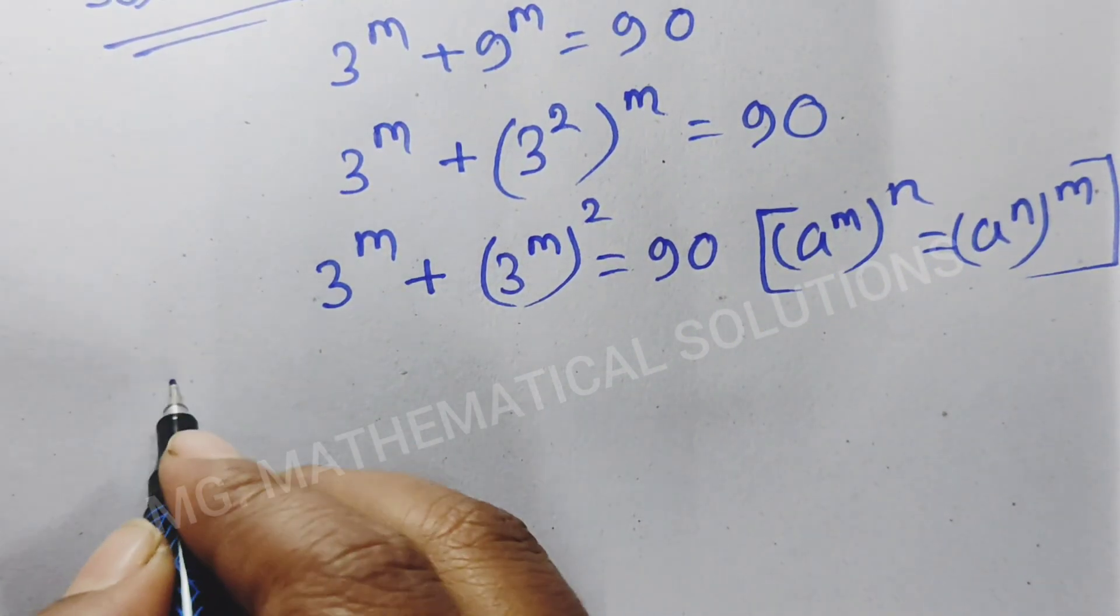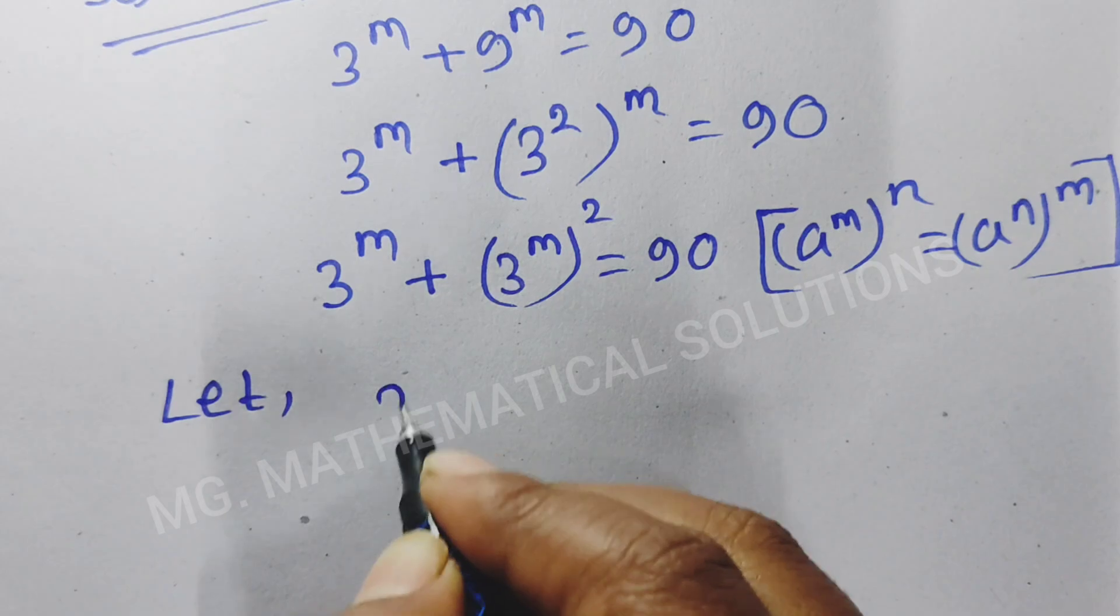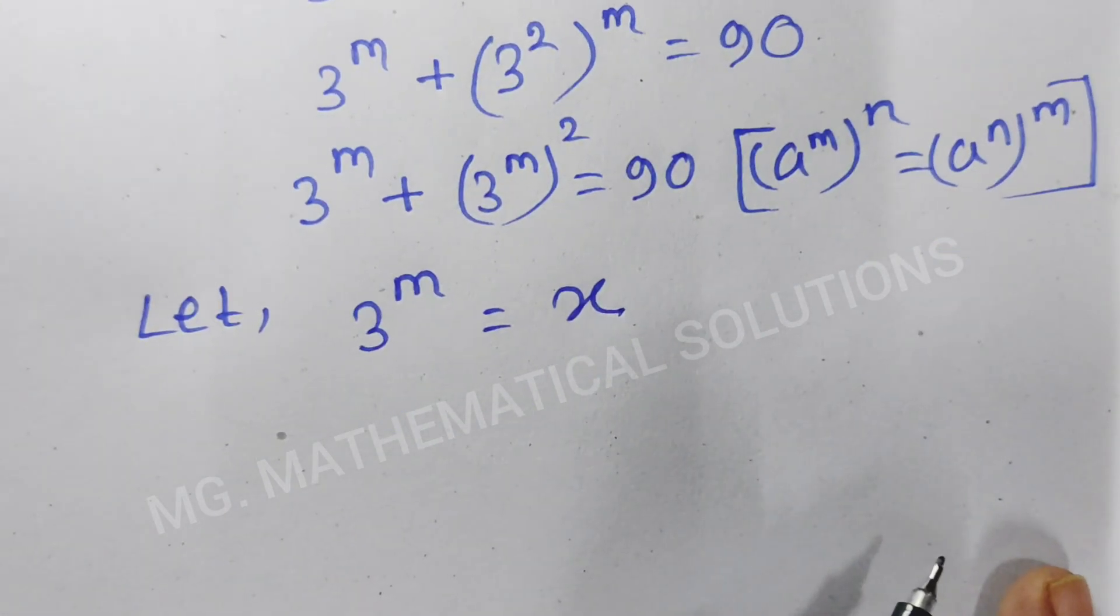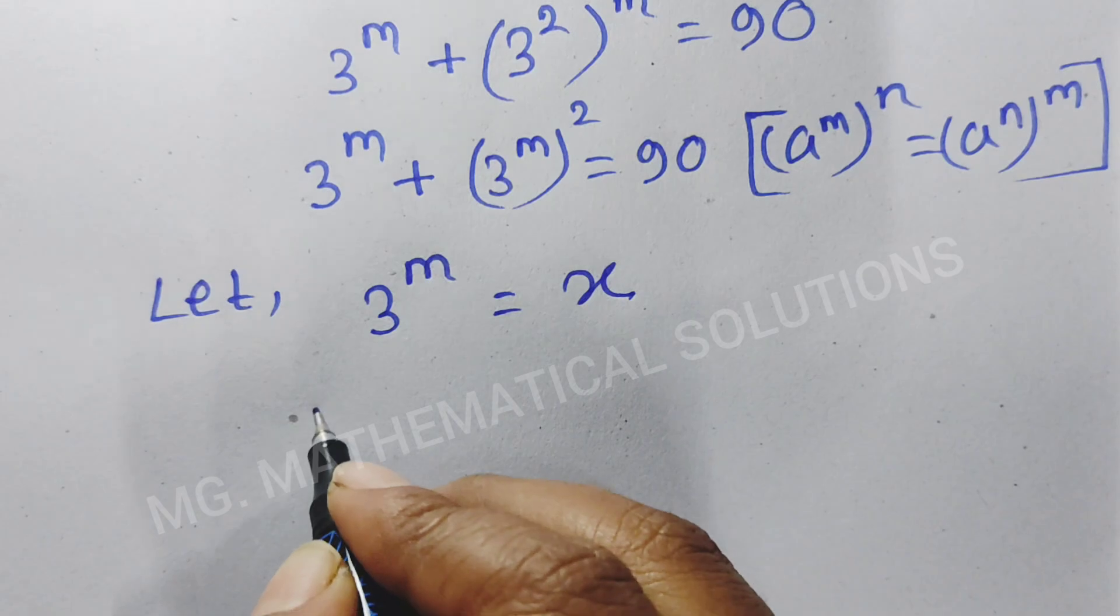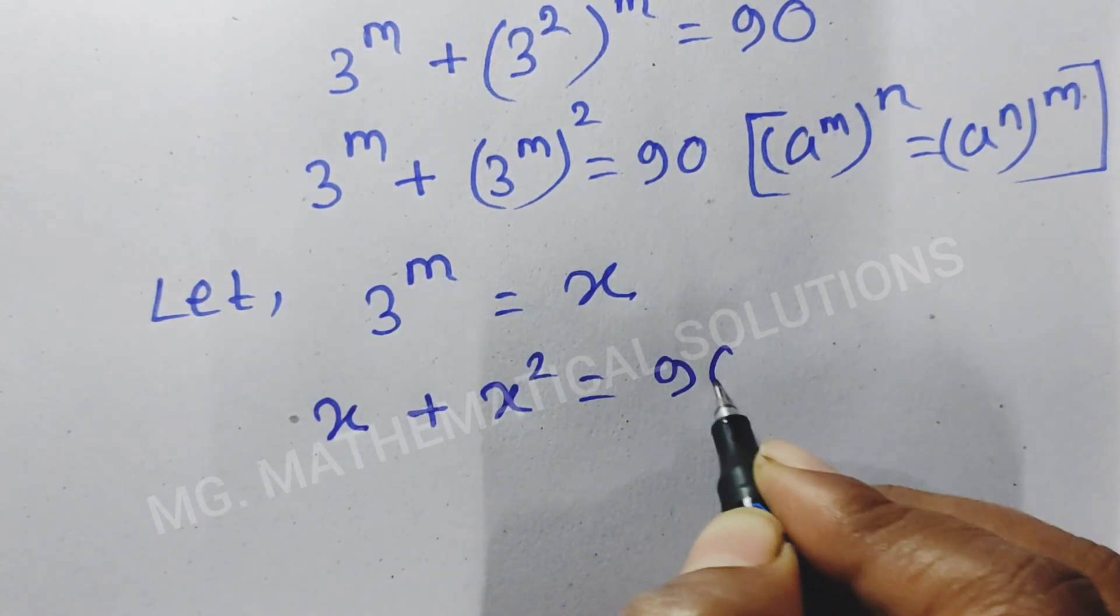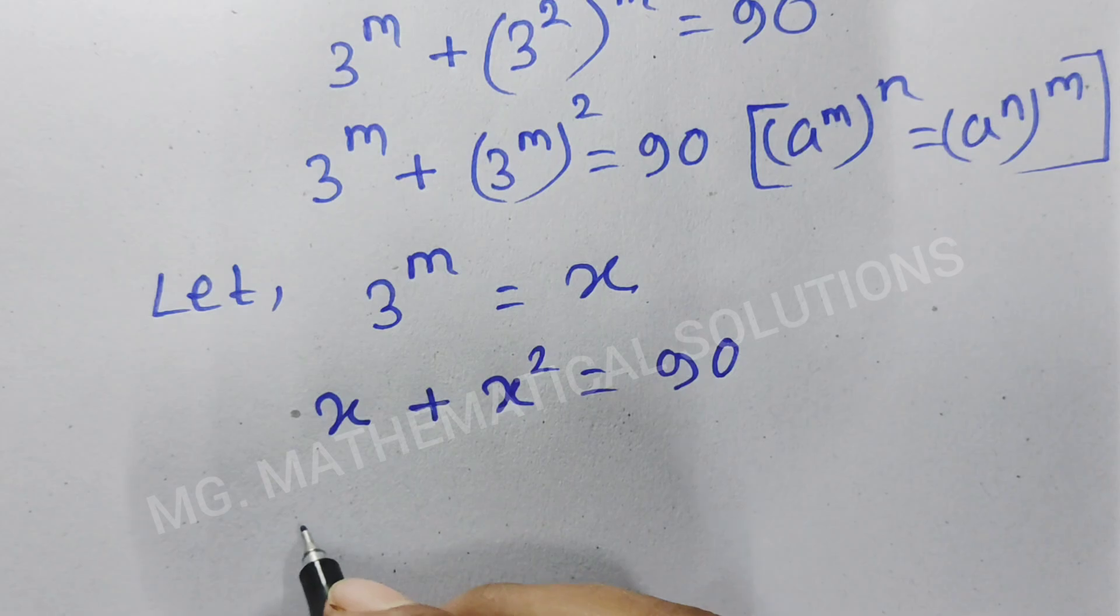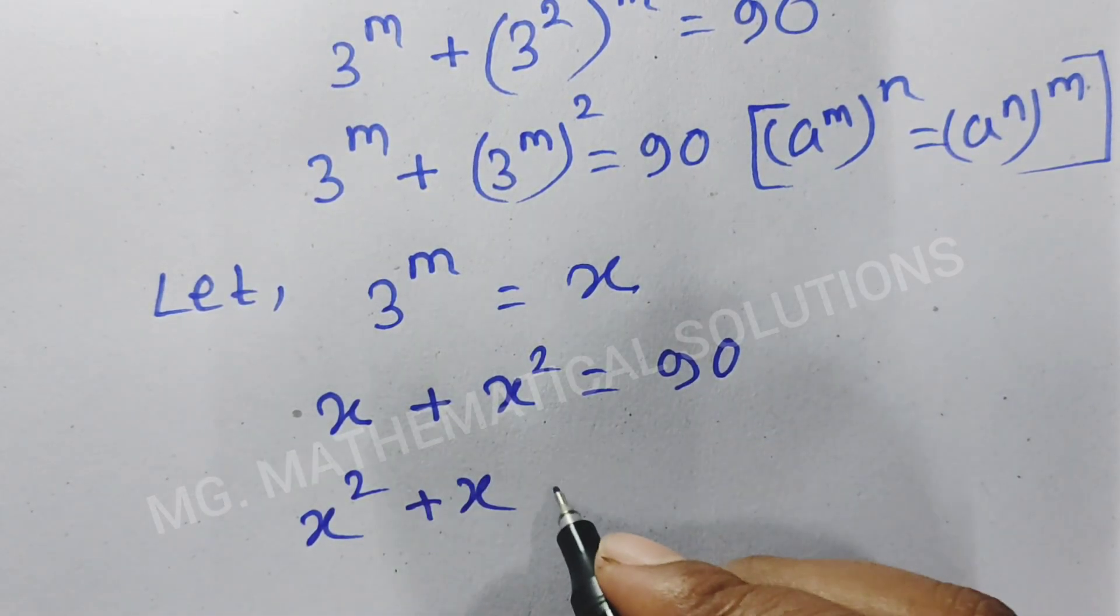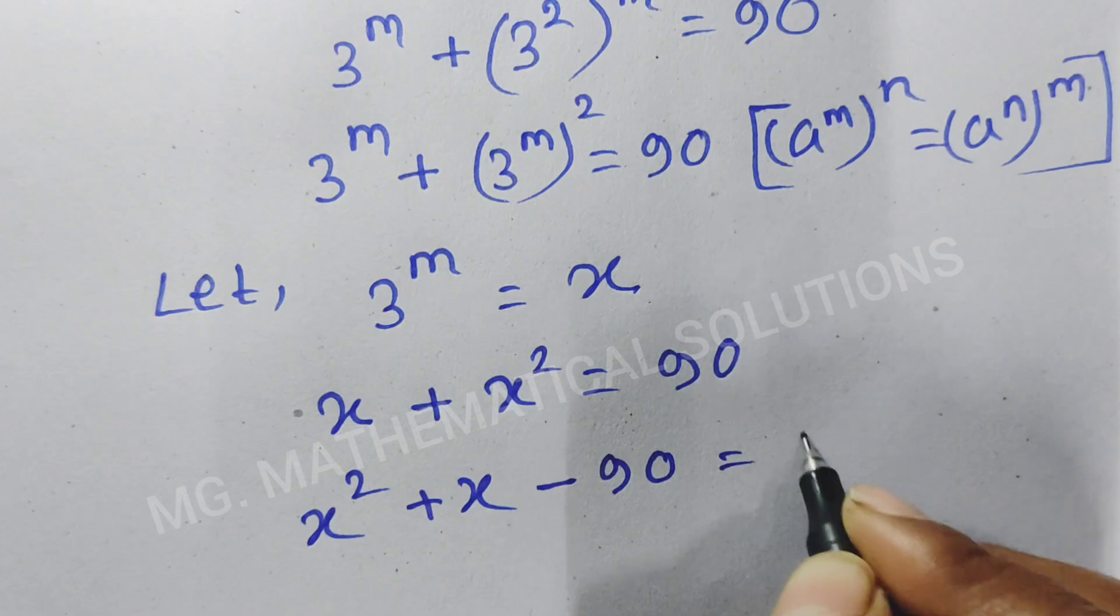Now, let 3 to the power m equal to x. So, the equation becomes x plus x square equal to 90. So, x square plus x minus 90 equal to 0. This is a quadratic equation.